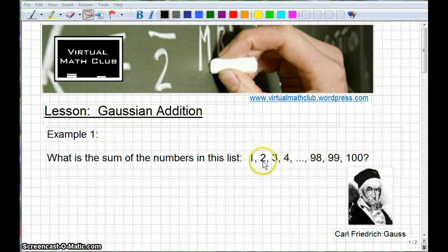1 plus 2 is 3, 3 plus 3 is 6, 6 plus 4 is 10. You know, you could do it. But it's not difficult mathematically, it's just a lot of work, a lot of number crunching.